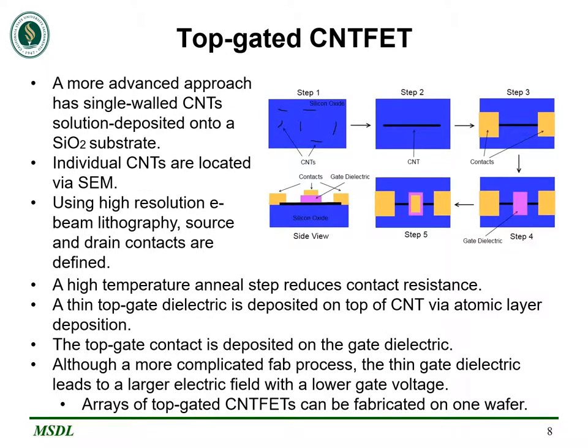That was the backgated CNT-FET. Years later, they greatly improved upon it with a new fabrication technique that creates a top-gated CNT-FET. The first step is to solution-deposit carbon nanotubes onto a silicon dioxide substrate. These nanotubes can be located with a scanning electron microscope, and using high-resolution electron beam lithography, the source and drain contacts are made. Then a high-temperature anneal step is applied to reduce contact resistance. A thin top-gate dielectric is deposited on top of the carbon nanotube via atomic layer deposition, and the top-gate contact is deposited on top of that gate dielectric. Although this is a more complicated fabrication process, it allows for a larger electric field with a lower gate voltage, and arrays of top-gated CNT-FETs can be made on one wafer.